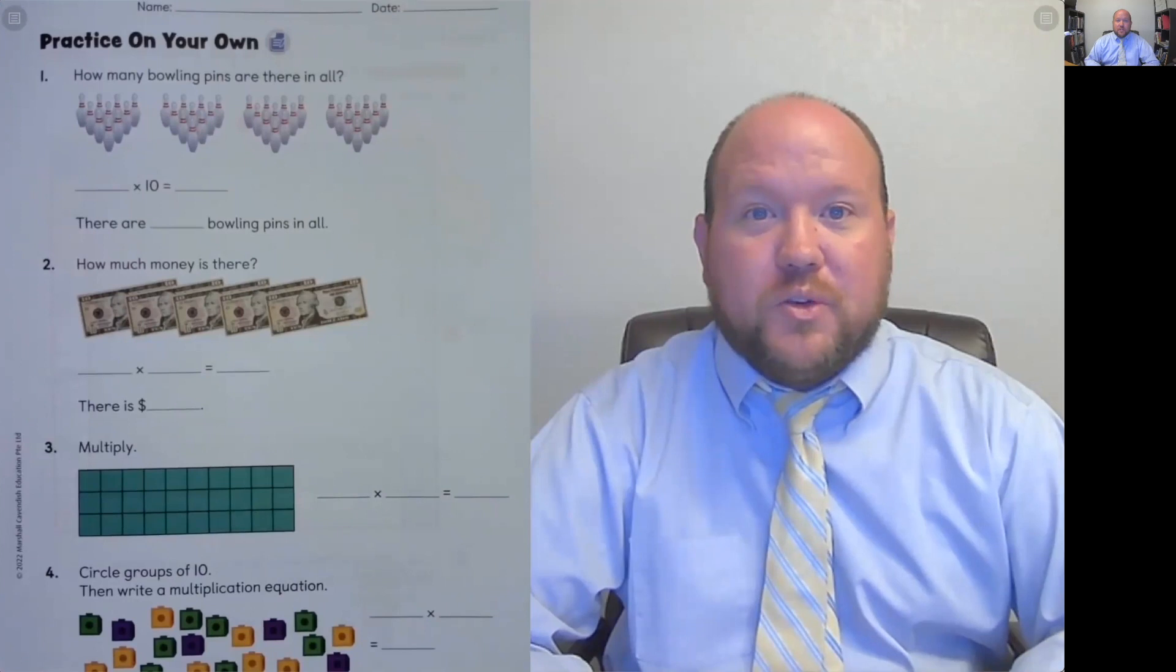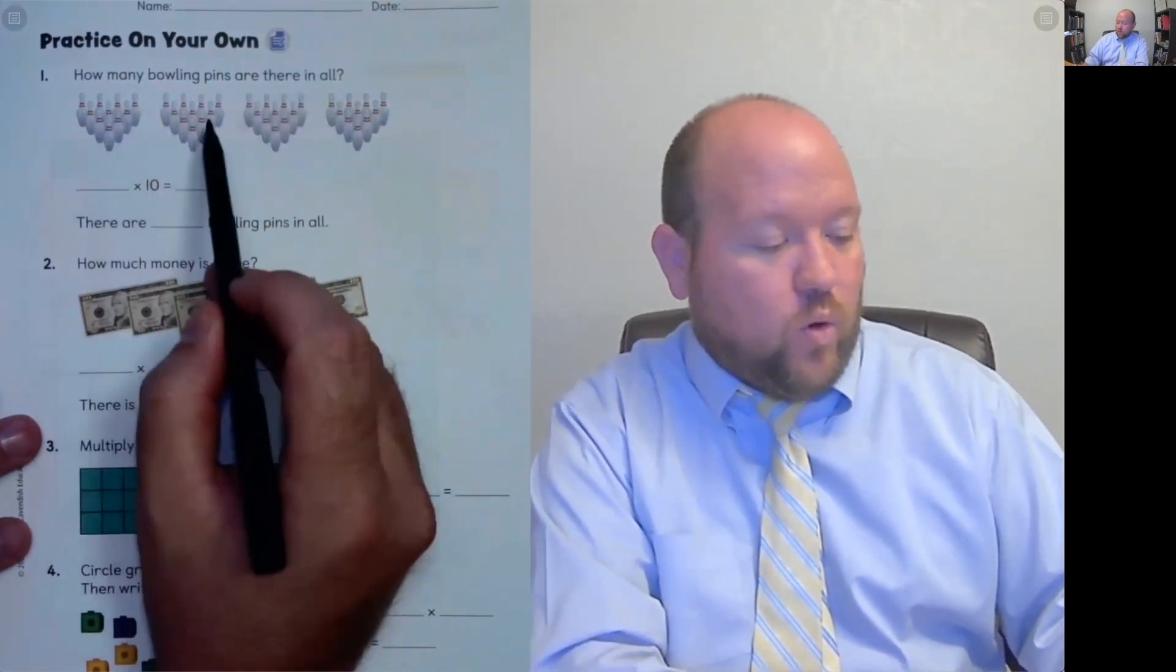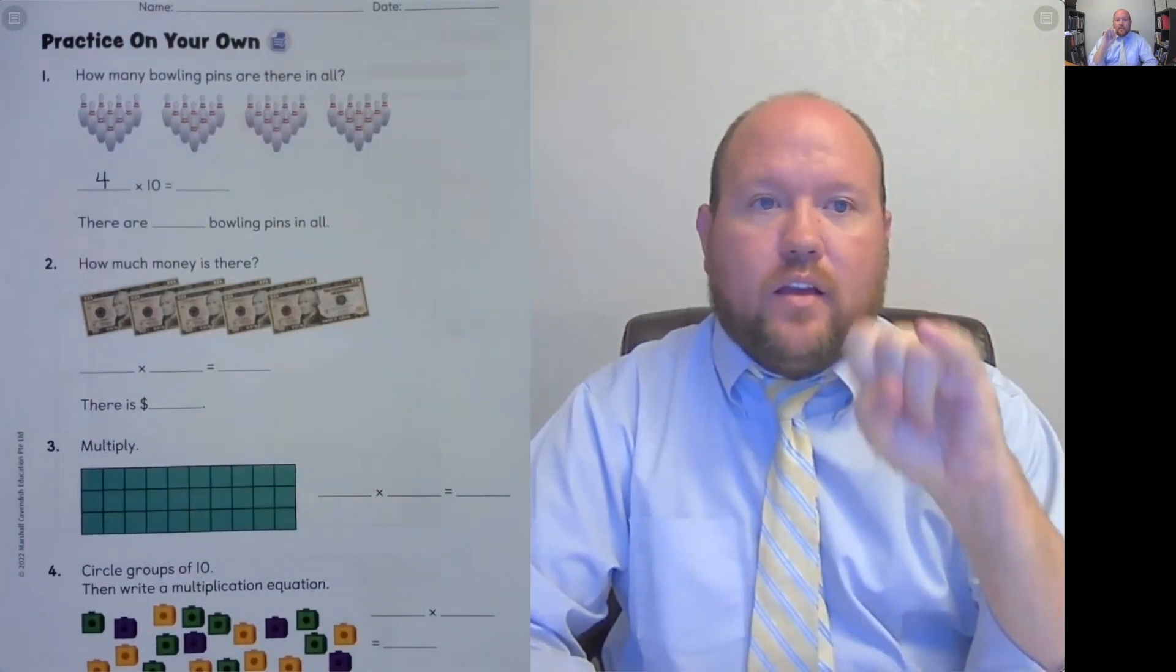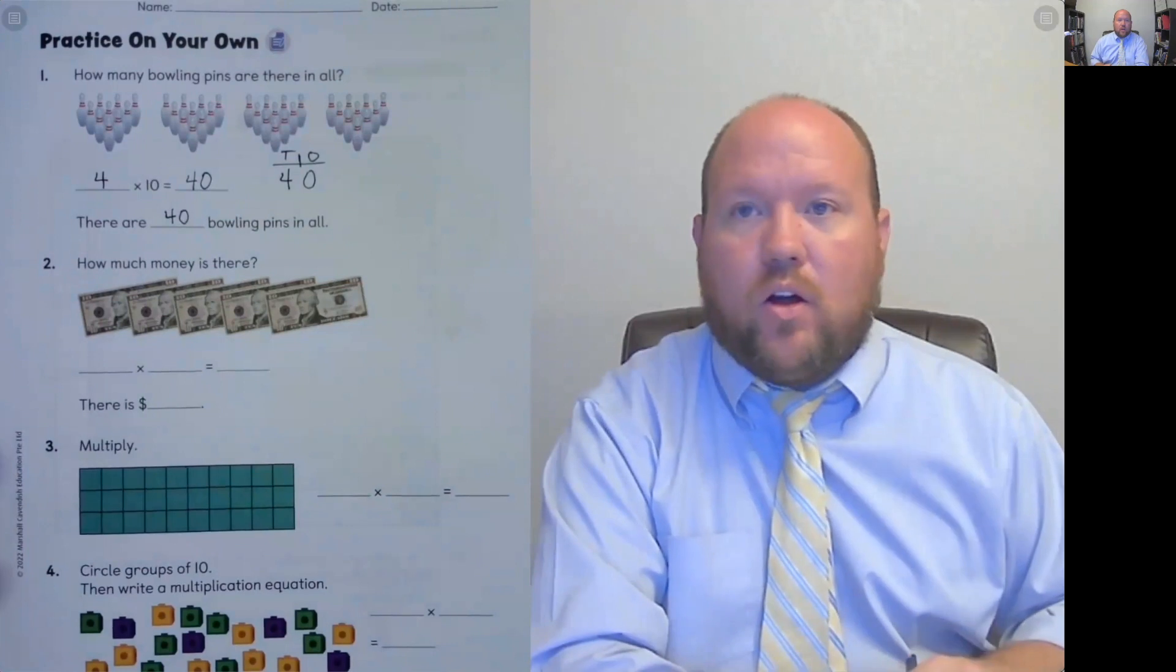So hopefully you were able to get all of the answers done. Now let's see how you did. The first thing is we have how many bowling pins are there in all. So we have 4 groups and there are 10 in each group. So we have 4 times 10. Hopefully we know that answer, but if we don't, we go 10, 20, 30, 40. 40 is the answer here. Also remember, you could just put a 4. You know that you're moving the place value over from the ones place to the tens place. So you need something to hold that place value, and what you use to hold that place value is a zero. So there are 40 bowling balls in all.